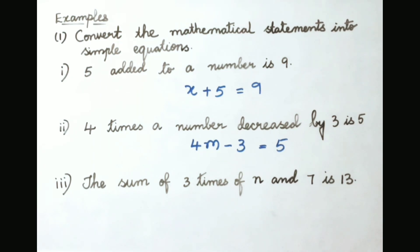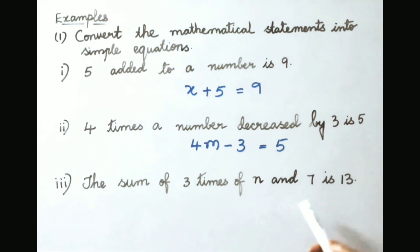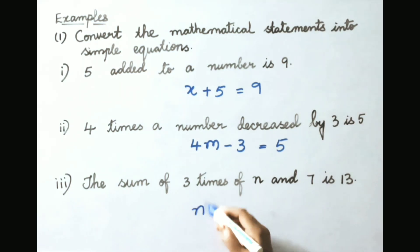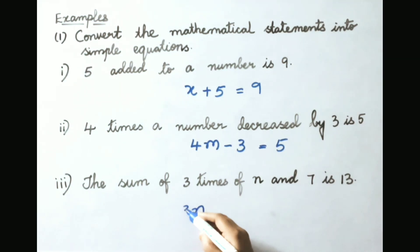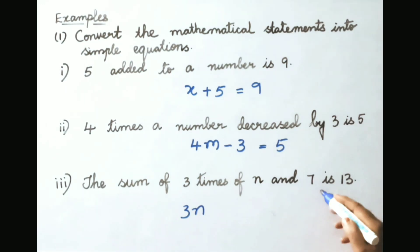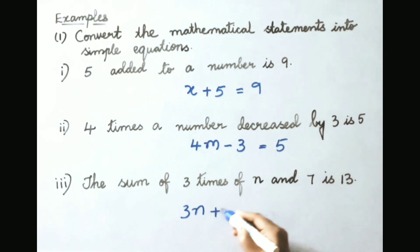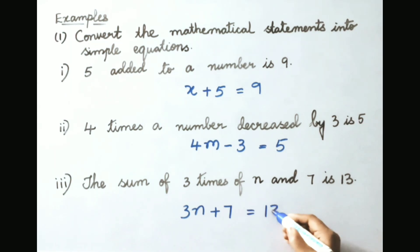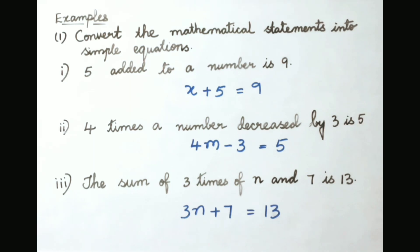Third: the sum of 3 times of n and 7 is 13. Sum of 3 times of n and 7 equals to 13. So the simple equation is 3n plus 7 equals to 13.